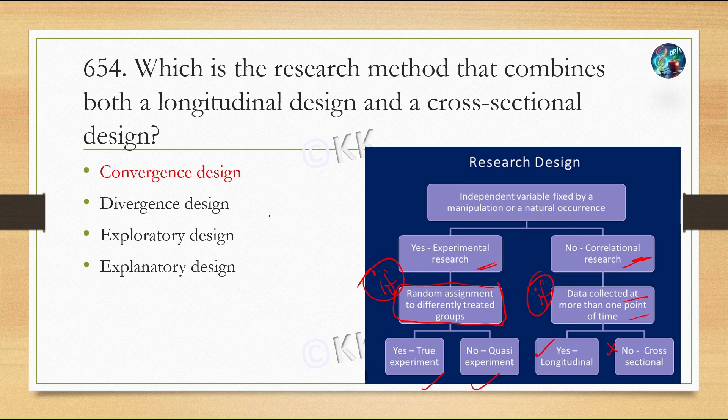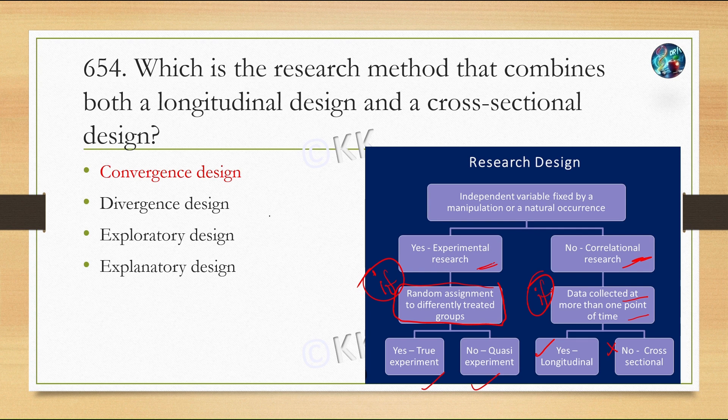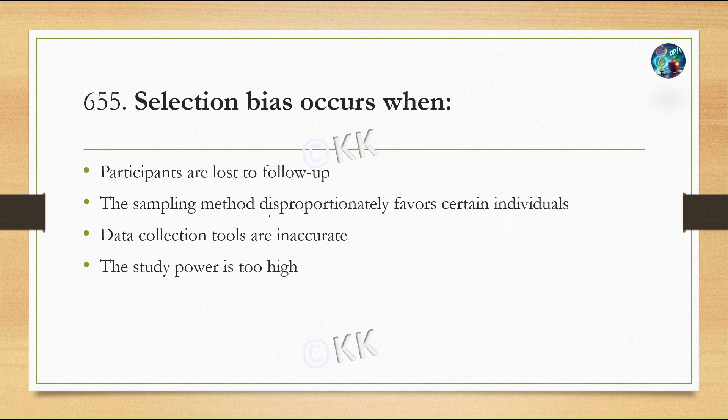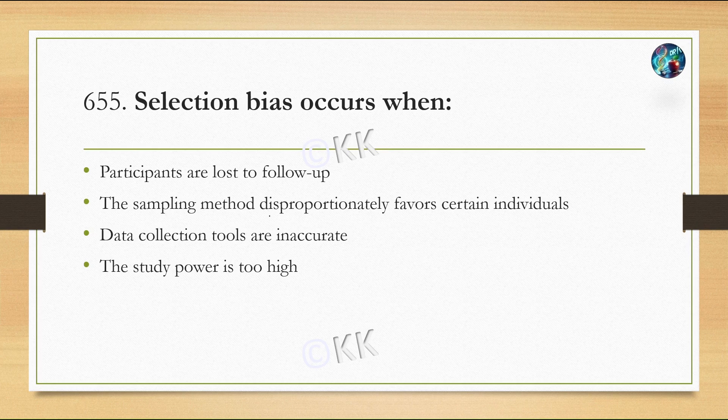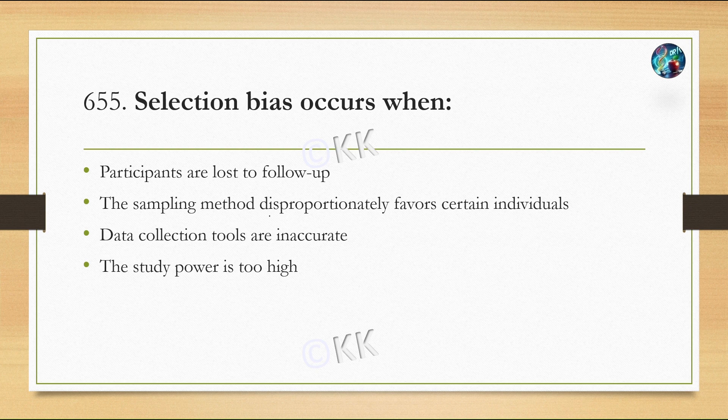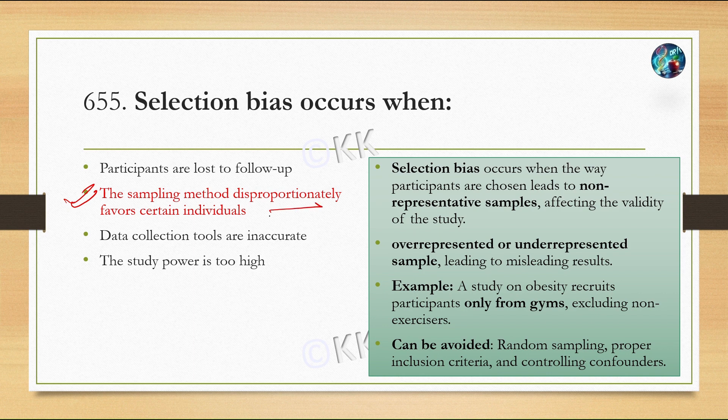Next question: Selection bias occurs when: Option A, participants are lost to follow-up; Option B, the sampling method disproportionately favors certain individuals; Option C, data collection tools are inaccurate; Option D, the study power is too high. The correct option is B, the sampling method disproportionately favors certain individuals.